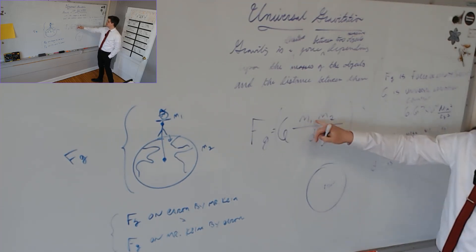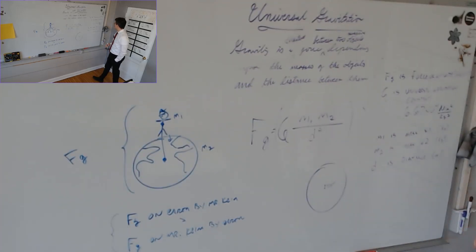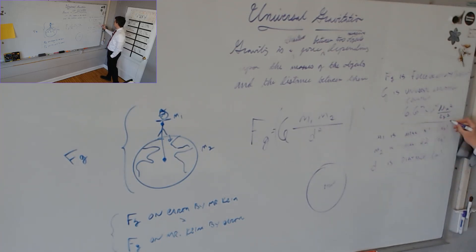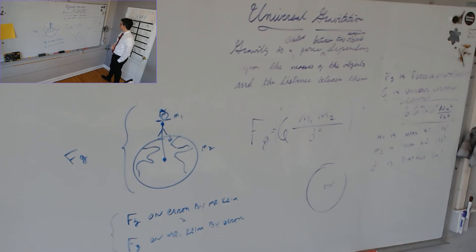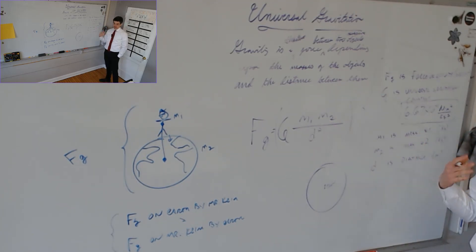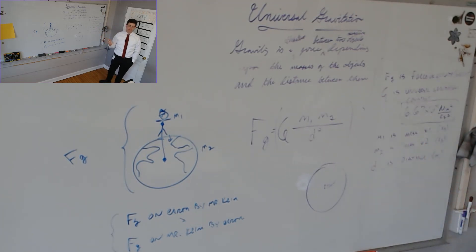These two masses multiply together to give us a kilogram squared, so that drops out. The distance squared drops out with the meters in the unit of G. We're left with just Newtons. So, memorize this number — you can use it for any two objects as long as you know their masses and the distance between them.